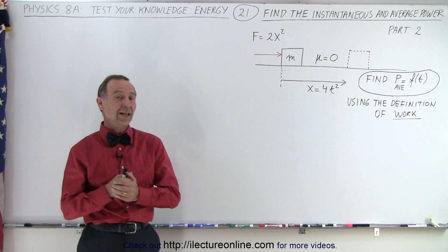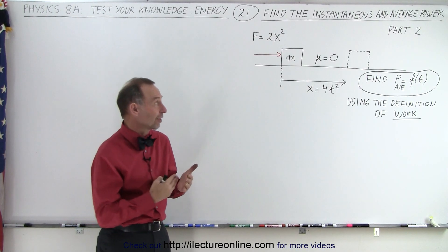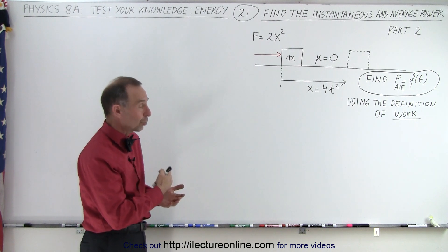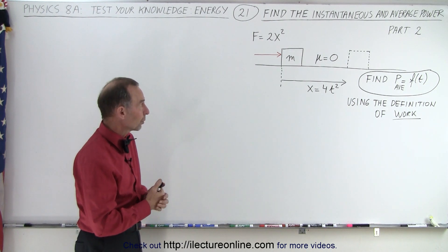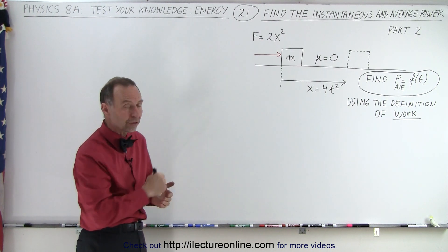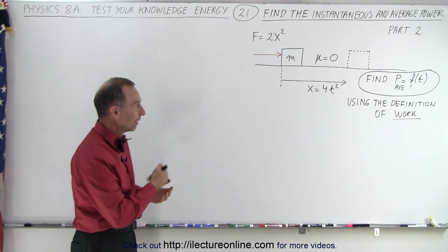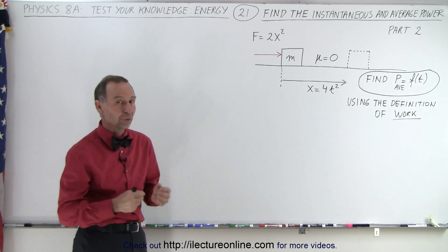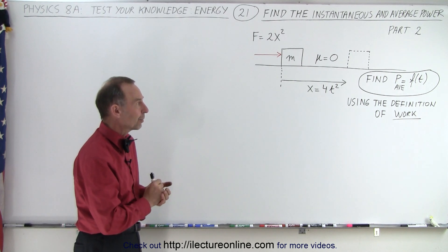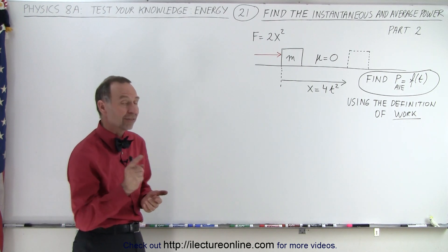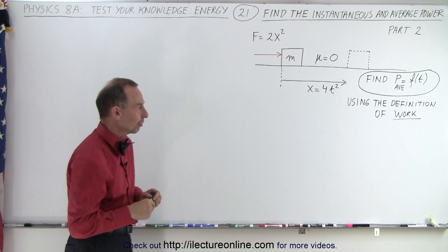Welcome to my lecture online. Now let's try part two of this very same problem. We have a force equal to 2x² pushing a block with mass m over a horizontal frictional surface, and the distance covered equals 4t². We're trying to find the average power as a function of time, but in this case, we're going to use the definition of work.